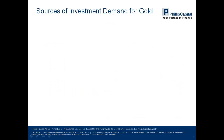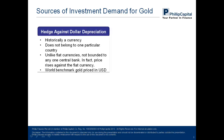Gold price is to a large extent determined by changes in investment demand. But where does investment demand come from? There are four main sources. First, gold as a hedge against dollar depreciation. Gold is a currency, both historically and now. Historically, from 1944 to 1971, it was the ultimate currency, as all other currencies were pegged to the U.S. dollar, and the U.S. dollar was pegged to gold in a ratio of one troy ounce of gold to 35 U.S. dollars.